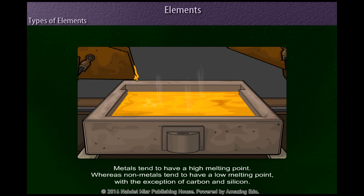Metals tend to have a high melting point, whereas non-metals tend to have a low melting point, with the exception of carbon and silicon.